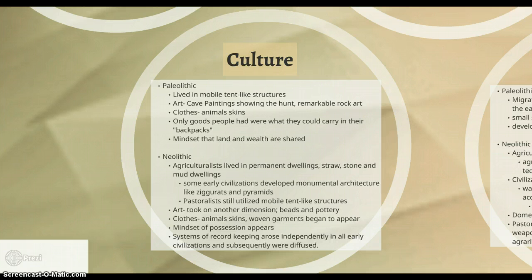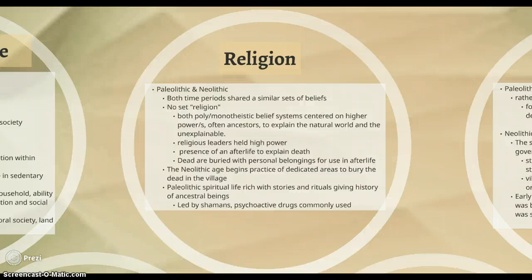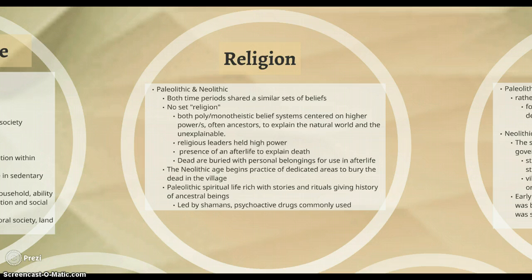Record keeping arose in different areas independently, just like agriculture did. Religion — both eras share some similarities. There wasn't really a set religion; there were polytheistic belief systems depending on where you were, with different worldviews trying to explain the natural world or the unexplained, with many relations to ancestors. Religious leaders like shamans still held high power. Neolithic age civilizations began to bury their dead in certain areas since they were sedentary — this was not possible for Paleolithic hunter-gatherers as they moved along.